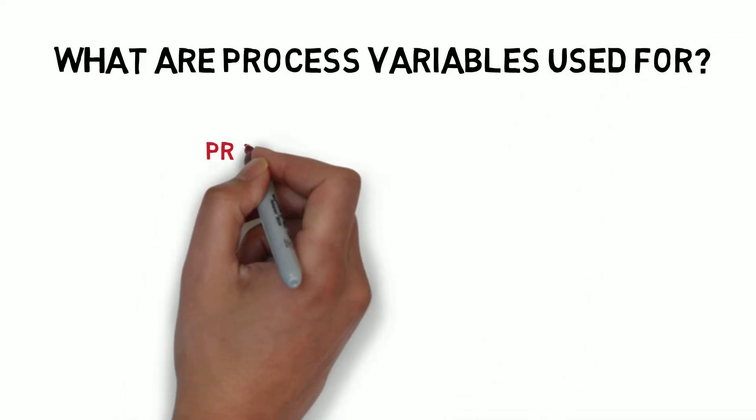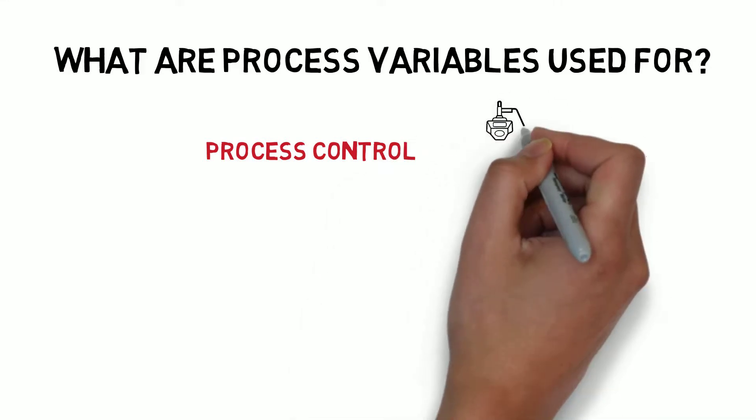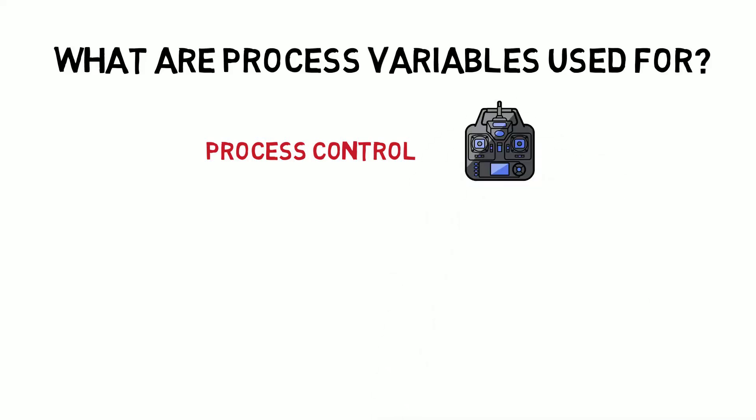They can be used for process control. Just like our home heating example, some process variables are used as an input to a process control loop to maintain a desired set point.